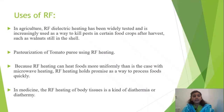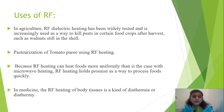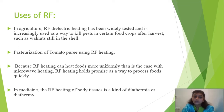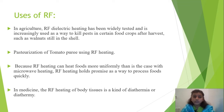Uses of RF in agriculture: RF dielectric heating has been widely tested and is increasingly used as a way to kill pests. Pasteurization of tomato puree uses RF heating because RF heating can heat foods more uniformly than microwave. RF heating is more uniform compared to both conventional and microwave heating. In medicine, RF heating of body tissues is a kind of diathermy.